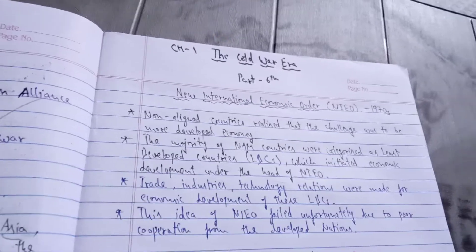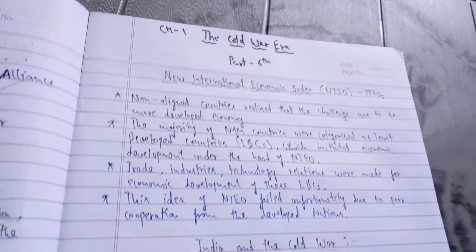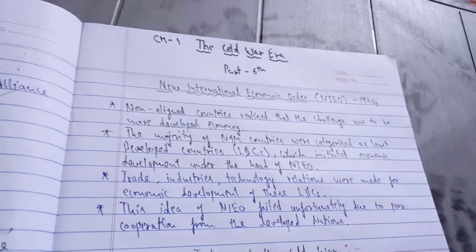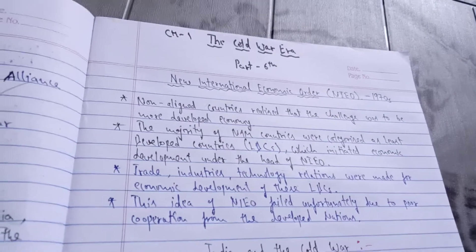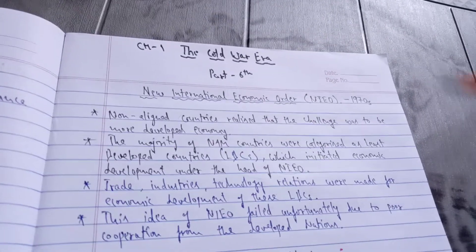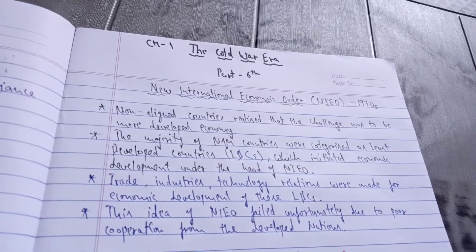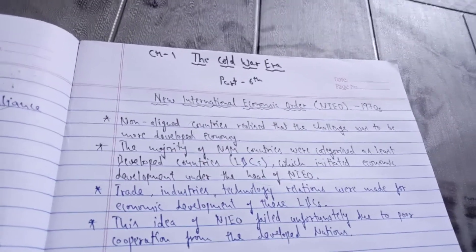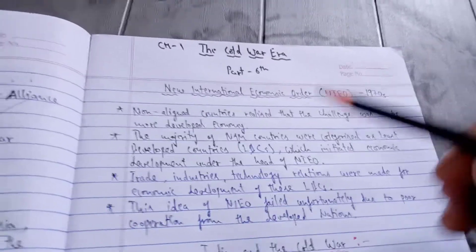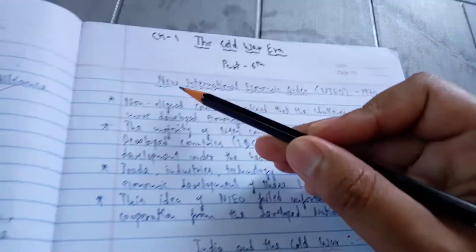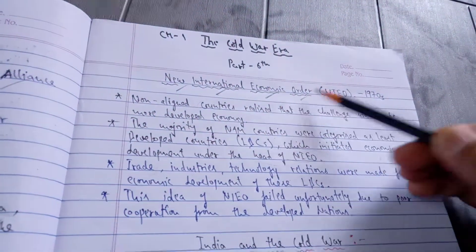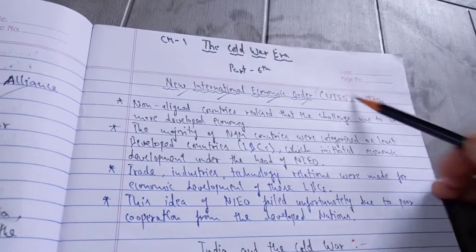Good morning to all the students of political science. I am back with the sixth part of this chapter and I shall try to finish it today, as just two topics are left. The first topic is New International Economic Order, which in short we call NIEO.